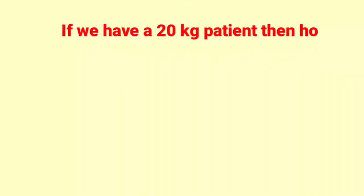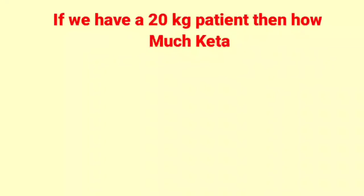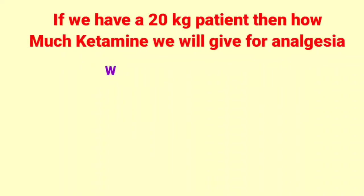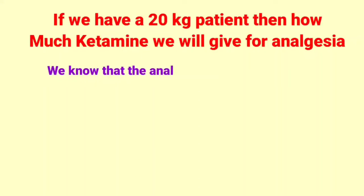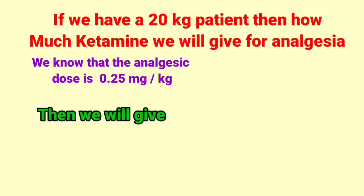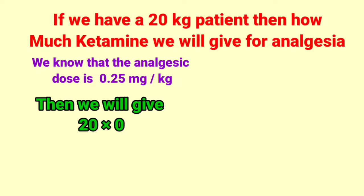If we have a 20 kg patient, then how much ketamine will we give for analgesia? We know that the analgesic dose is 0.25 mg per kg. Then we will give: 20 multiplied by 0.25 equals 5 mg.